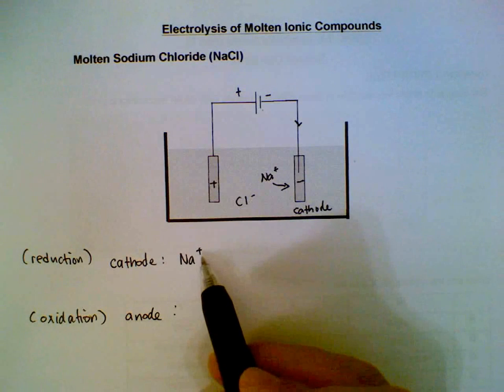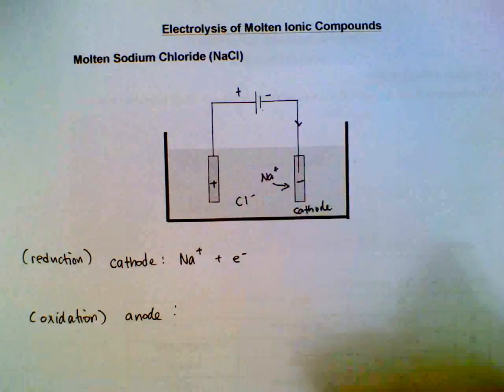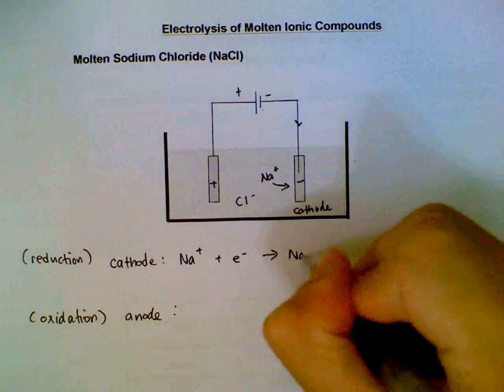Sodium ion when it reaches the cathode will be discharged. To do that, it will need to gain one electron to form the sodium element.